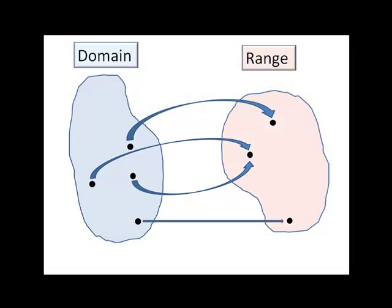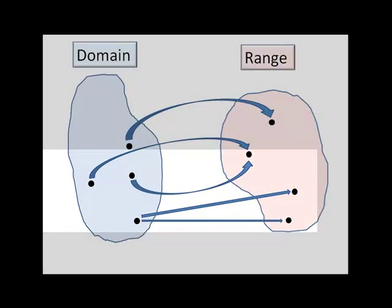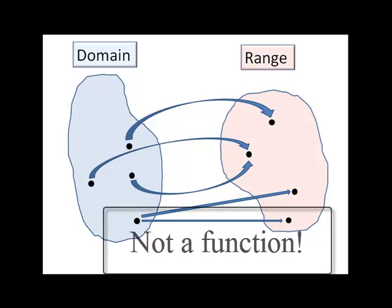Where we'll see the definition of function break down is if we have an input mapped to separate outputs. This does not meet our definition of function, and thus what we have now is no longer a function.